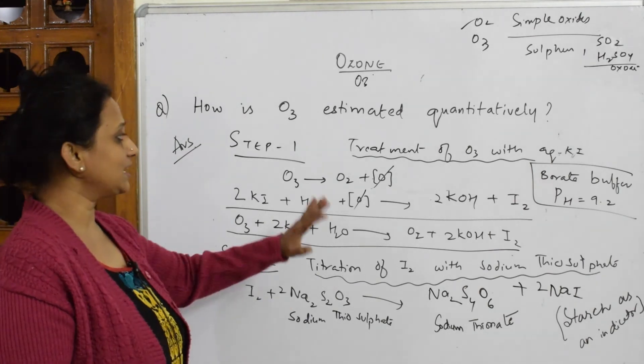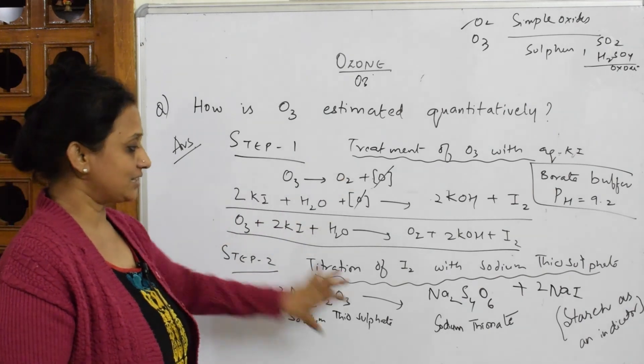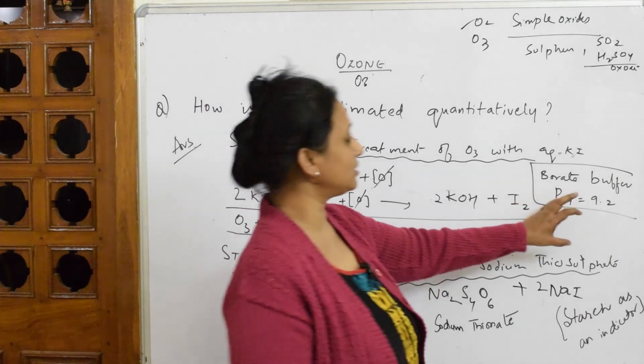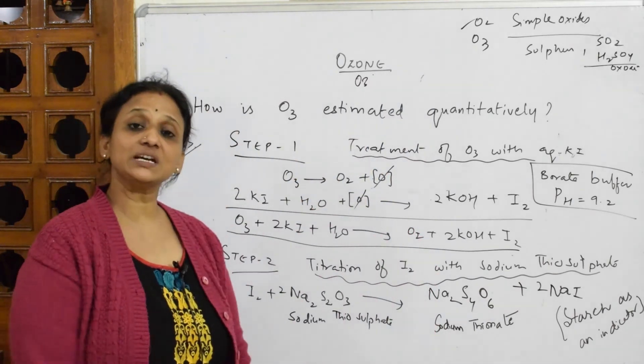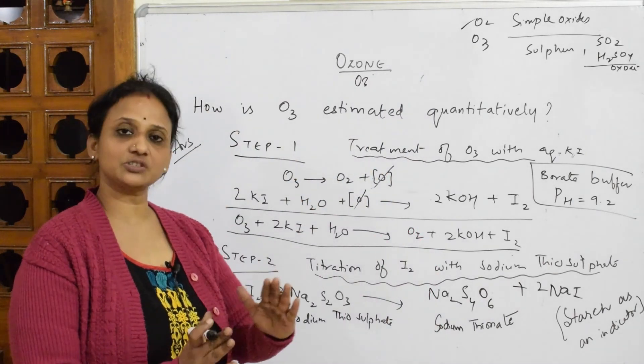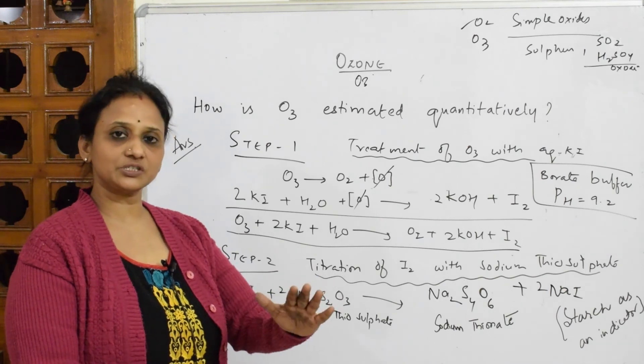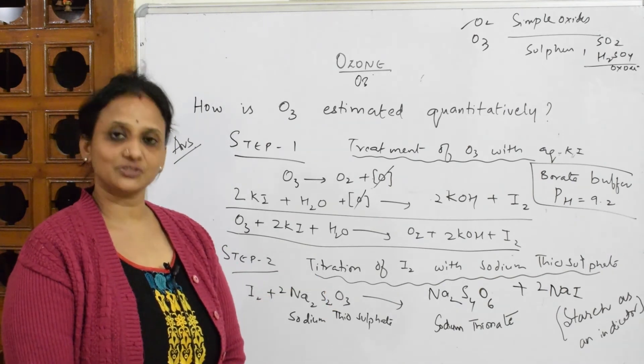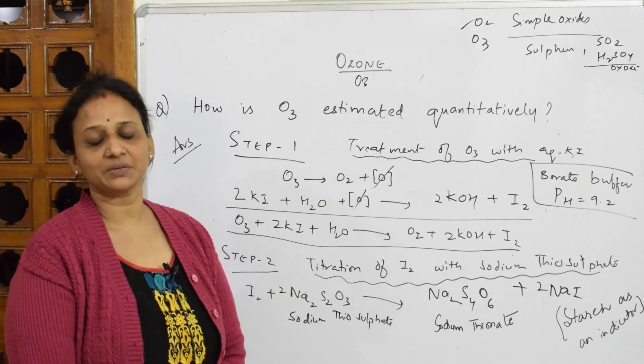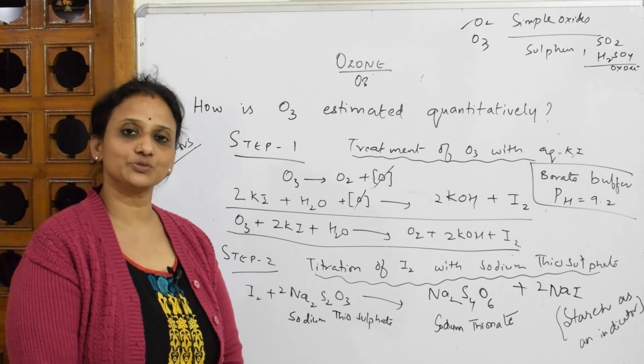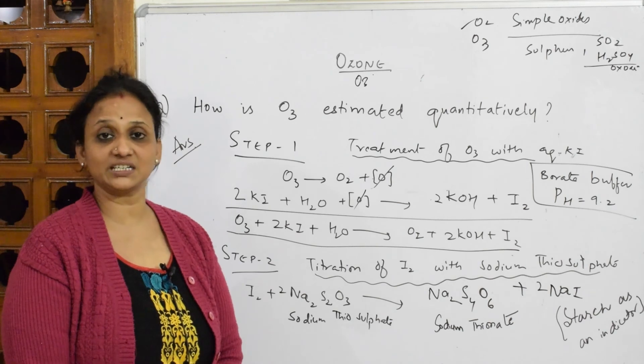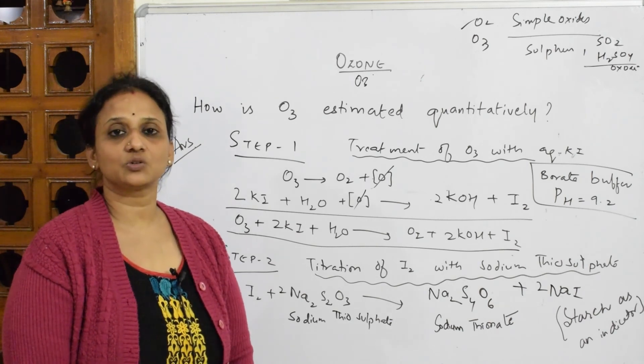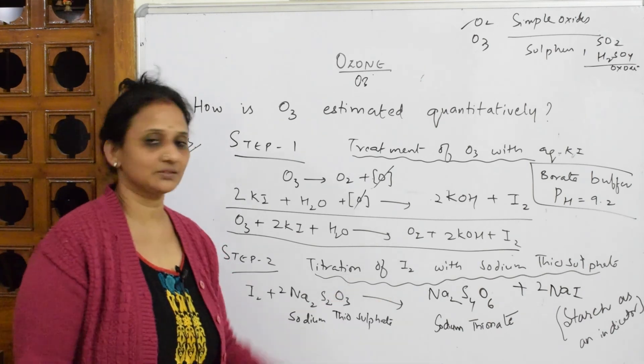But here, as of now, you still only have the reaction, then finally titration. Write the buffer here, write the pH and write the indicator. So this is how you're going to estimate ozone. The procedure is only there for you all. We've written the procedure. Further calculations not required for your grade 12 exam. Further, if you're interested, you can go to Google and just browse how to estimate ozone quantitatively.